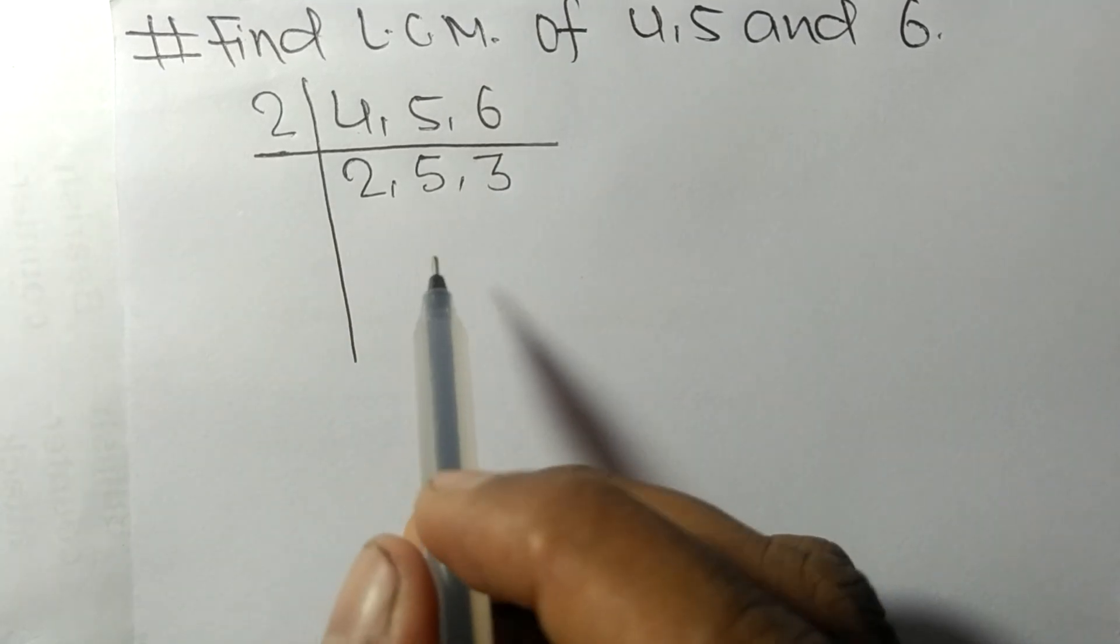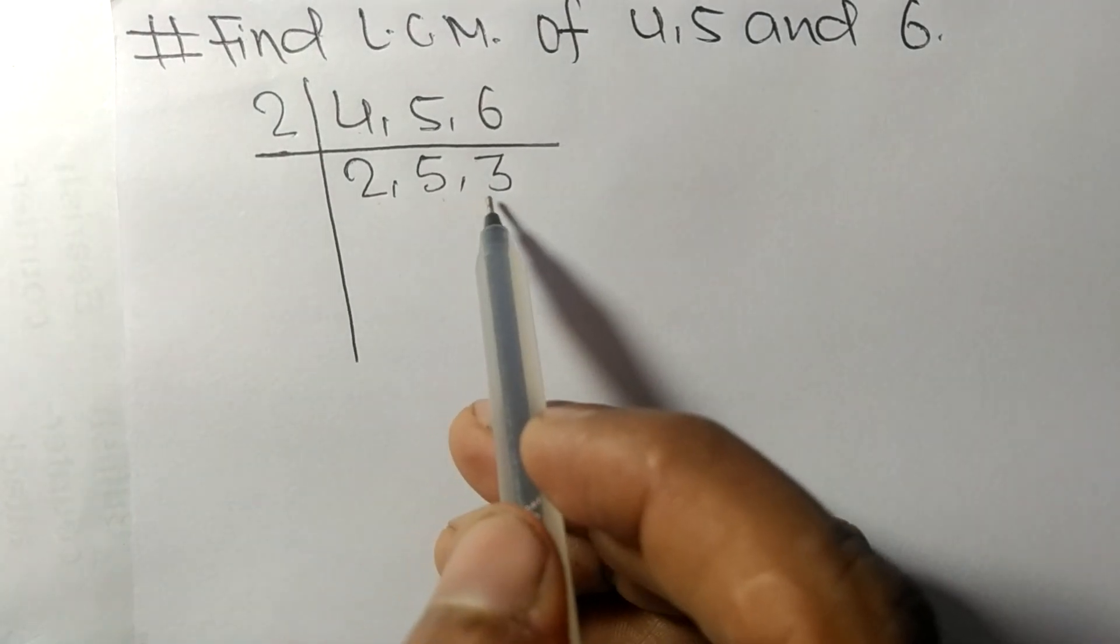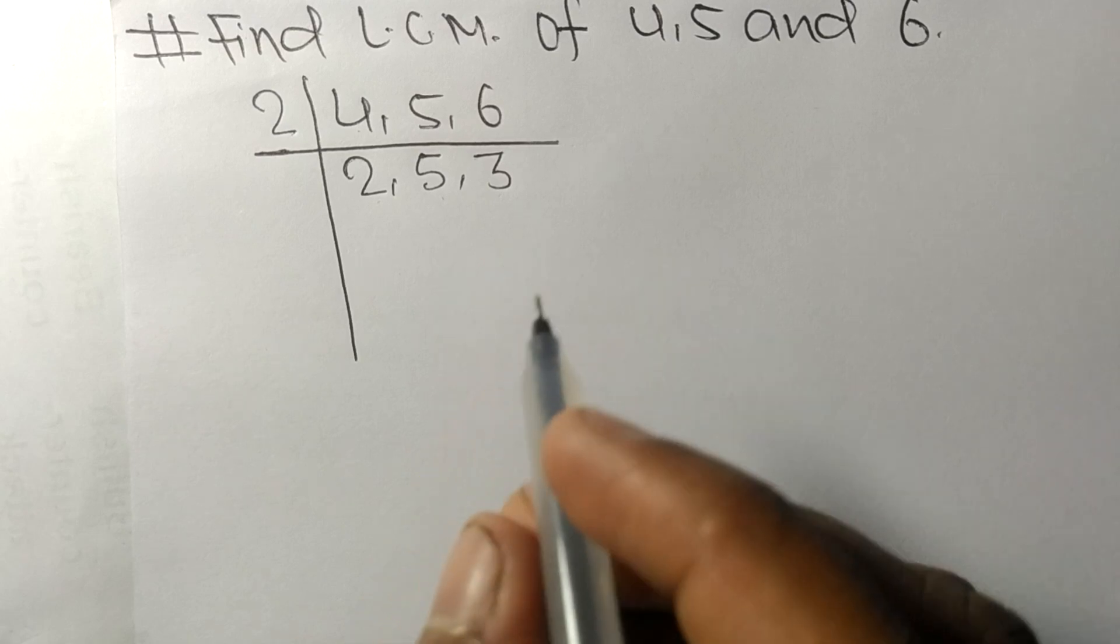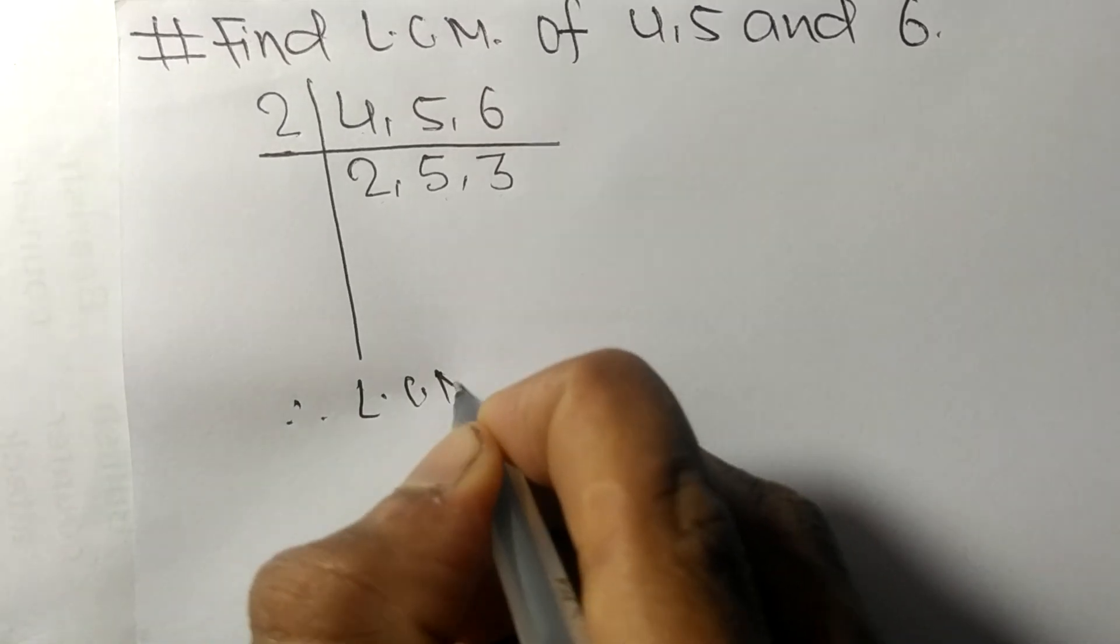3 means 6. So now we got 2, 5, and 3, which are not divisible by the same number. Therefore, LCM...